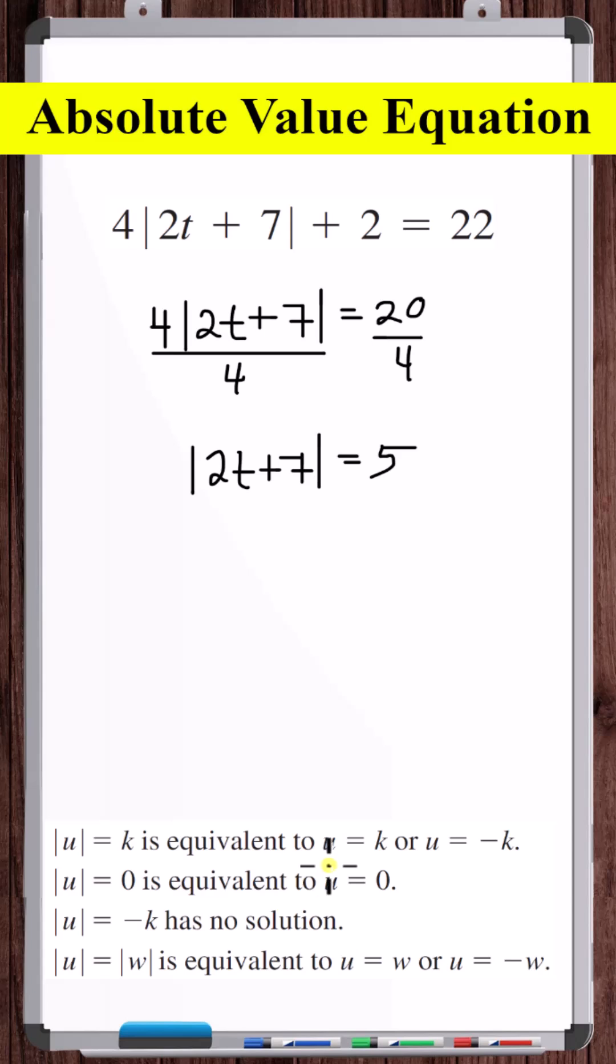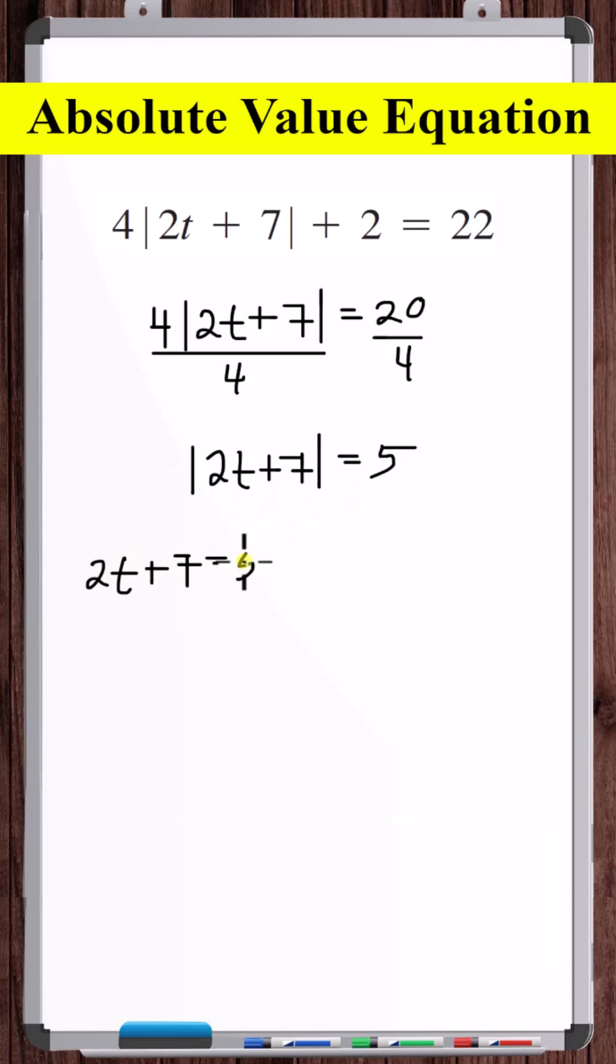That's equivalent to that expression is equal to the constant or that expression is equal to minus the constant. So this is equivalent to 2t plus 7 equals 5 or 2t plus 7 equals minus 5.